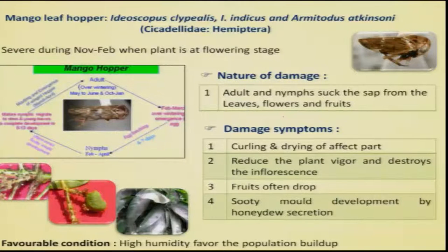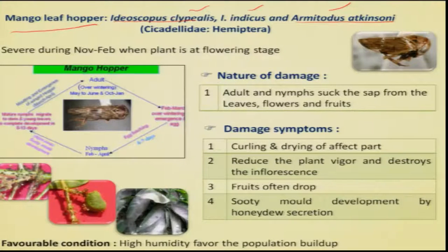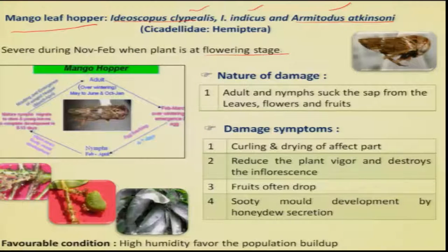Coming to the leaf hoppers, the mango leaf hoppers are mainly three species. They all occur together sometimes, and in some cases certain species are dominant, among which Amritodus atkinsoni is the biggest of the three species, whereas Idioscopus clypealis is the smallest one. They are quite specific to mango and mainly attack at the flowering stage. During the off season, these species are normally found resting on the bark, branches, or leaves.